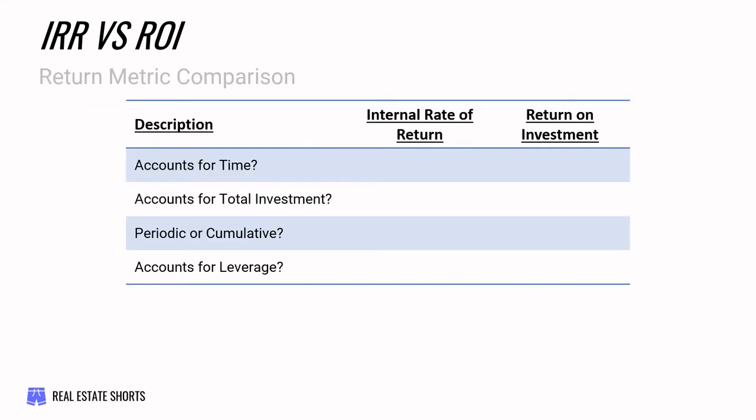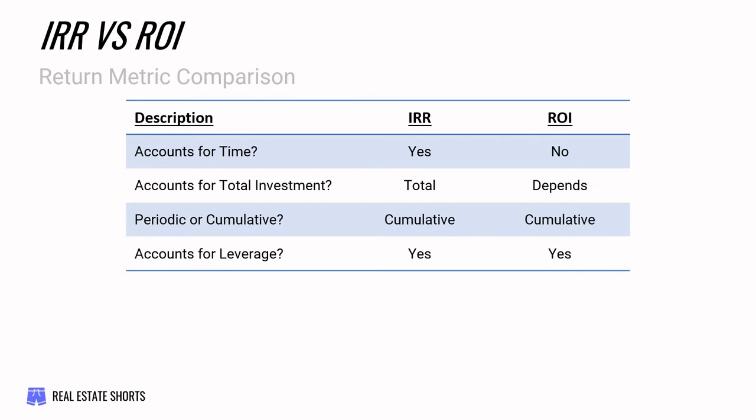Just to make sure we're all on the same page, we're talking about internal rate of return and return on investment. I've identified four key points of difference or similarity between these two metrics. First, it's probably best to think about them in terms of how they account for time. Both of these are cumulative return measures — they look at everything from the first dollar you invested through the last dollar you received, from when you first purchased the property all the way through when you sell it.